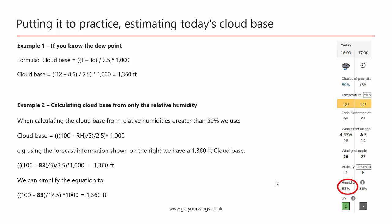If you're not too good at doing these formulas in your head, you can type or paste them into a browser, hit enter, and Google will work out the answer for you. If we don't have the dew point, we can use the relative humidity. The formula using relative humidity can be simplified: take 100 minus the relative humidity, divide by 12.5, and multiply by 1000 to give the cloud base — which is 1360 feet for today.